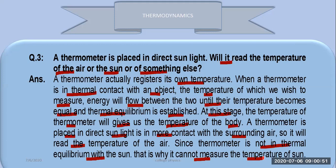What happens when a thermometer is in thermal contact with an object whose temperature we wish to measure? Energy will flow between the two until the temperatures become equal and thermal equilibrium is established. At this stage, the thermometer gives us the temperature of that body. Since the thermometer is in more contact with the surrounding air, it will read the temperature of the air.